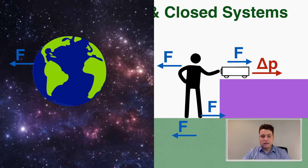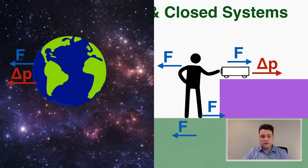Because there's nothing to prevent the earth from moving as a result of that force, the earth is also experiencing an impulse in the opposite direction. So when you push that cart forward, you're actually delivering as much impulse on the earth to the left as you are to the cart on the right. It's the same impulse.